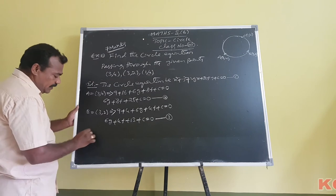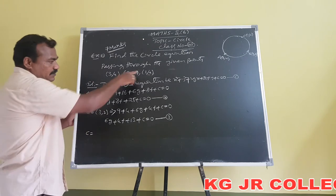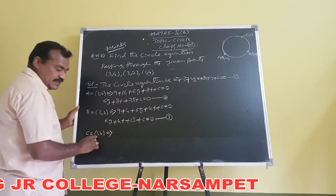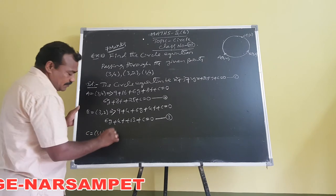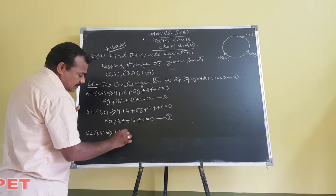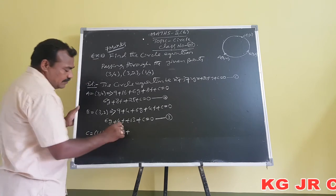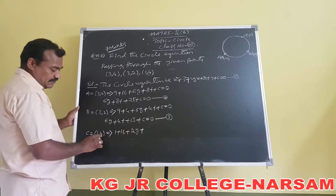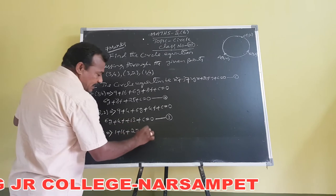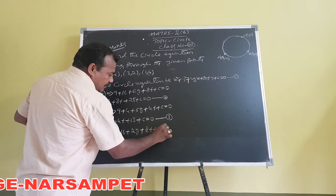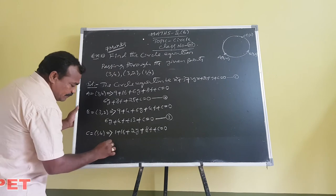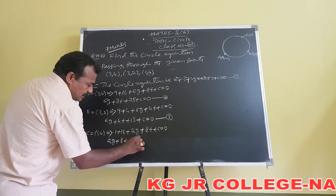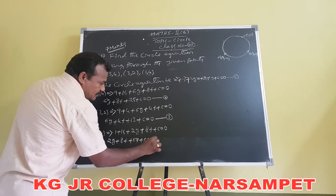Finally, substituting point C = (1,4): x=1, y=4 gives 1 + 16 + 2g + 8f + c = 0. Writing this: 2g + 8f + 17 + c = 0. This is the third equation.